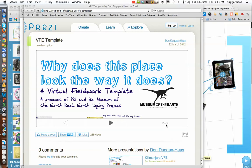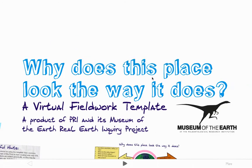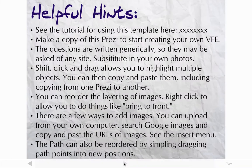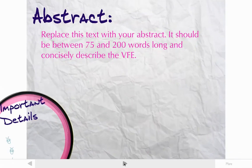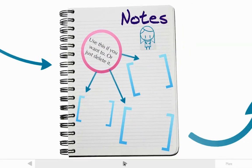Once you've opened the template and before you've made a copy of it, which you can see you can do with that button right there, you should take a look around and familiarize yourself a little bit with it in play mode. Click on full screen to see it full screen, and then you can use the arrow buttons on your keyboard or down here to scroll through the path. There are various things highlighted, some helpful hints for using the template, a space for your abstract for your VFE, some important details, and some notes if you want to use those.